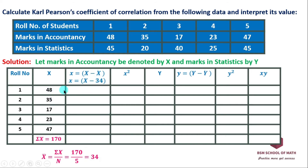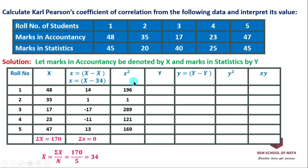For the first row, 48 minus 34 gives 14. For the second row, 35 minus 34 gives 1. We continue computing the remaining deviations, then square each: 14 squared is 196, 1 squared is 1, and so on. The summation of sigma small x-squared is equal to 776.